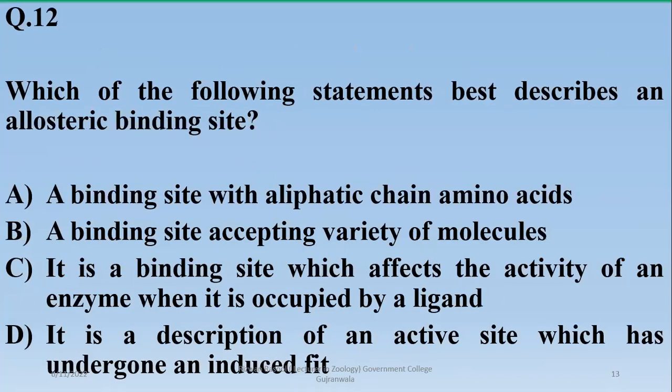Number twelve: which of the following statements best describes an allosteric binding site? An allosteric binding site is a site on an enzyme other than the active site which affects the activity of the enzyme when occupied by a ligand. Allosteric feedback regulation plays an important role in enzyme activity.